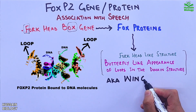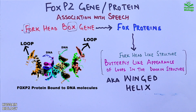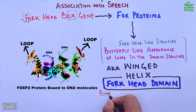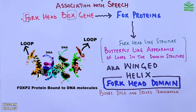That's why it's also known as 'winged helix,' and it is this FOX head domain that binds DNA and drives the transcription of different genes. If we break down its structure, it has 80 to 100 amino acids forming a motif that binds to DNA.